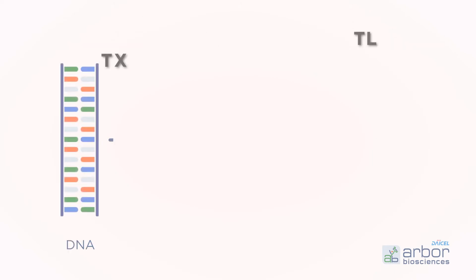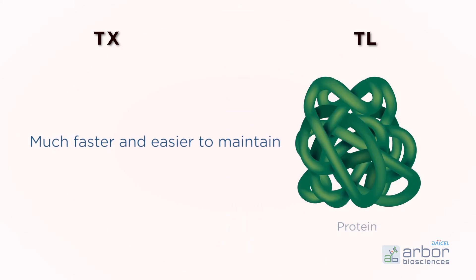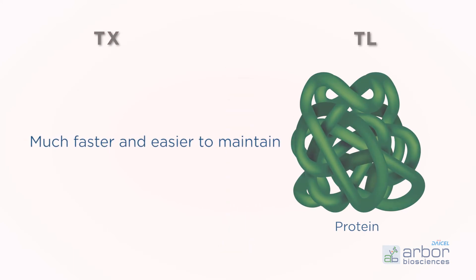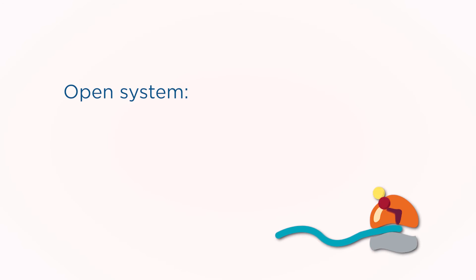Cell-free transcription translation, or TXTL, makes protein production much faster, typically hours rather than weeks, and takes place in an open system, which facilitates simple optimization, manipulation, and customization of the reaction.